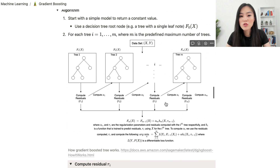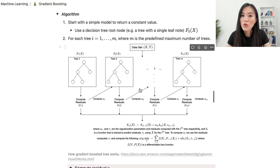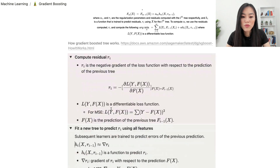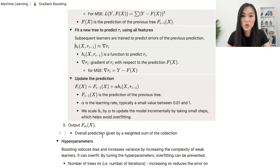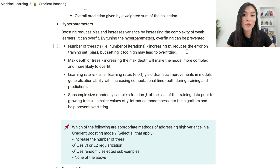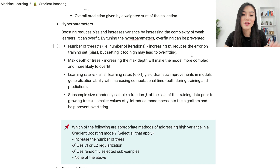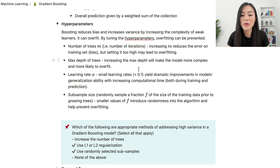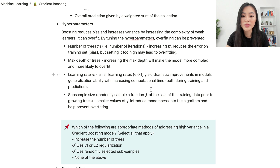Now let's look at the hyperparameters of gradient boosted trees. Boosting reduces bias and increases variance by increasing the complexity of weak learners — it can overfit, but tuning hyperparameters can prevent that. The first hyperparameter is the number of trees M: increasing M reduces training error and bias, but setting it too high may lead to overfitting. Maximum depth of trees is another hyperparameter — increasing it makes the model more complicated and more likely to overfit.